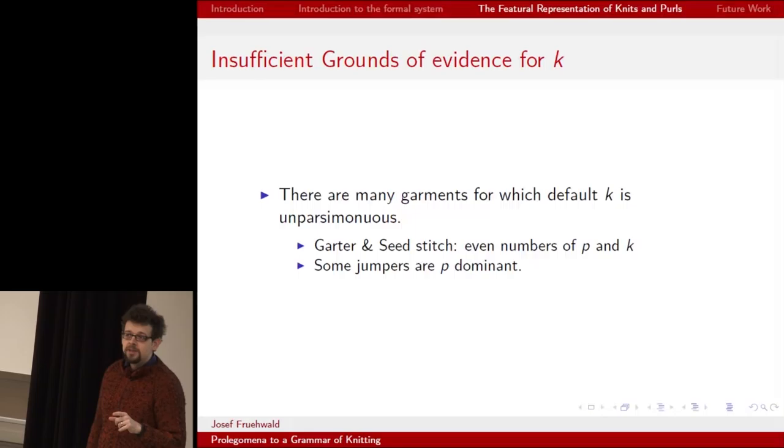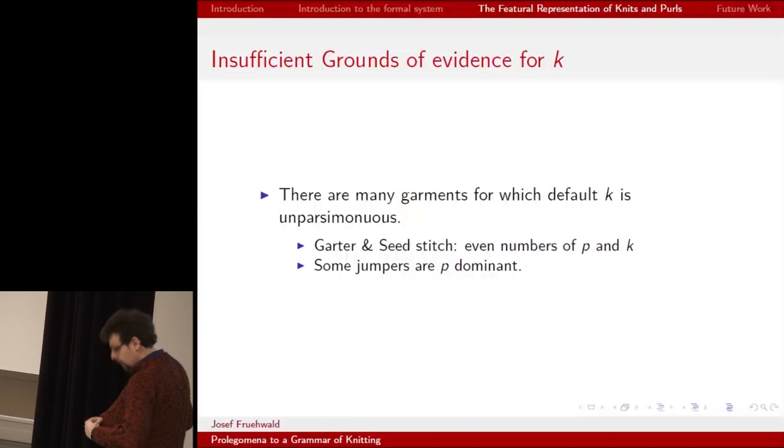However, there are many garments for which a default knit hypothesis is unparsimonious. For example, garter and seed stitch have equal numbers of knits and purls. And some garments, like this one, are purl dominant.